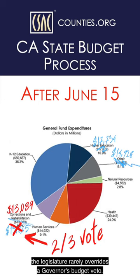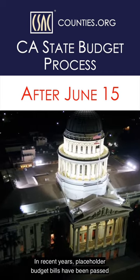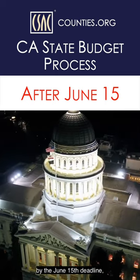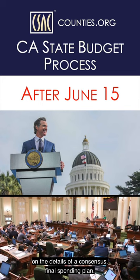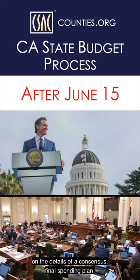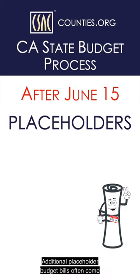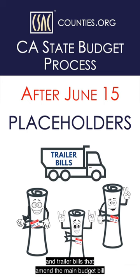Historically, though, the Legislature rarely overrides a Governor's budget veto. In recent years, placeholder budget bills have been passed by the June 15th deadline, while the Legislature and Governor continue to work on the details of a Consensus Final Spending Plan. Additional placeholder budget bills often come in the form of junior budget bills and trailer bills that amend the main budget bill that was passed by June 15th.